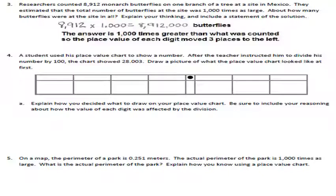The first word problem: researchers counted 8,912 monarch butterflies on one branch of a tree at a site in Mexico. They estimated the total number of butterflies at the site was 1,000 times as large. Multiplying 8,912 by 1,000 moves each digit three places left — so the two goes to thousands, one to ten-thousands, nine to hundred-thousands, eight to millions — giving eight million nine hundred twelve thousand butterflies. We say 'about' because we're estimating from one branch.